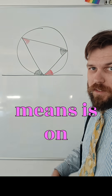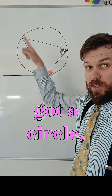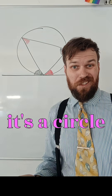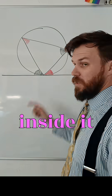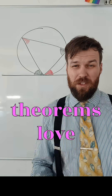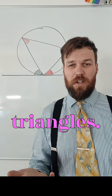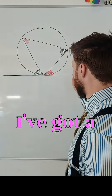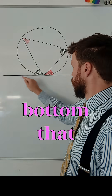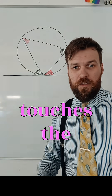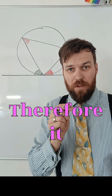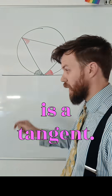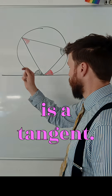And what that means is, on the board I've got a circle — it's a circle theorem — and I've got a triangle inside it, because circle theorems love triangles. I've got a line along the bottom that touches the circle in one place. Therefore, it is a tangent.